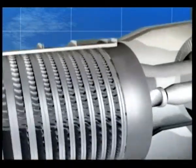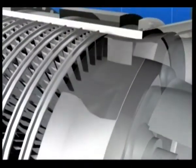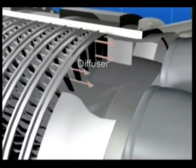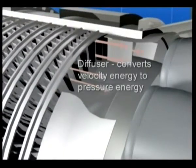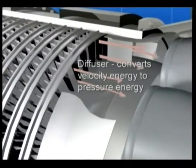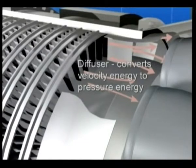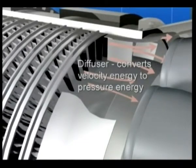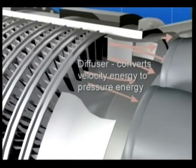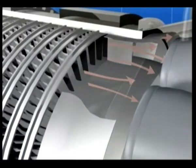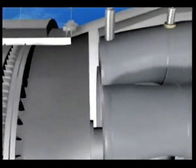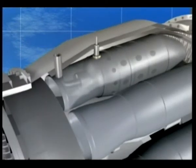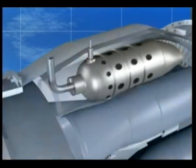Air leaves the compressor and passes to the diffuser, which converts the velocity energy to pressure energy. On leaving the diffuser, the air passes into the combustion chambers.